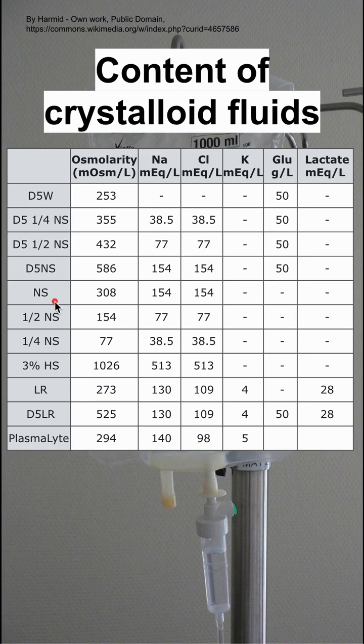Normal saline, half normal saline, quarter normal saline, and hypertonic 3% saline all have varying amounts of sodium and chloride. Normal saline is the one that's isotonic of that group.